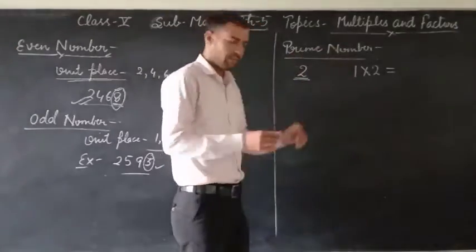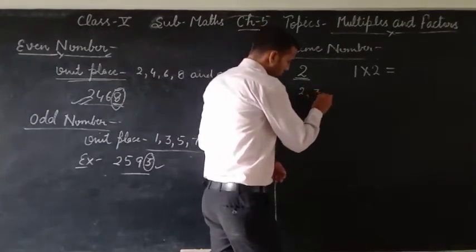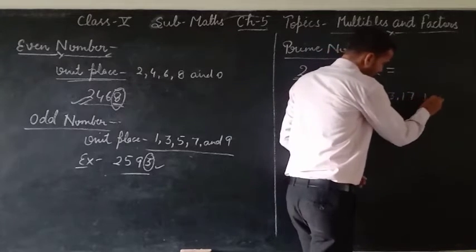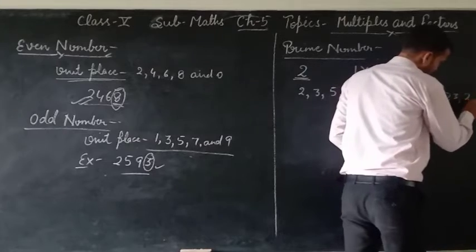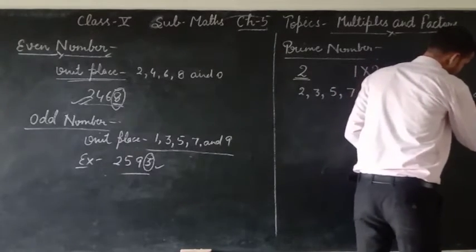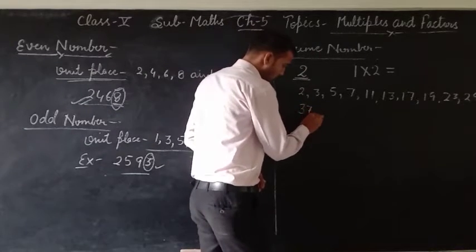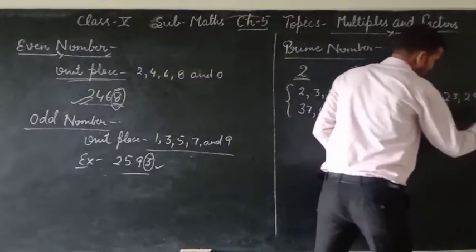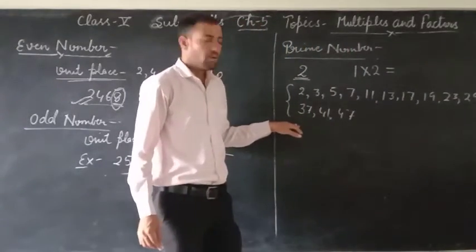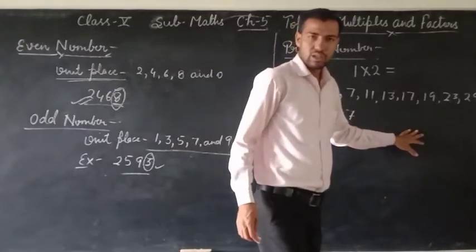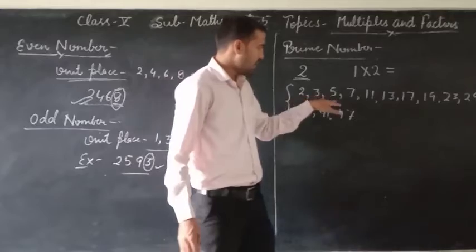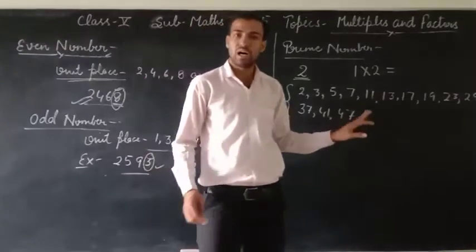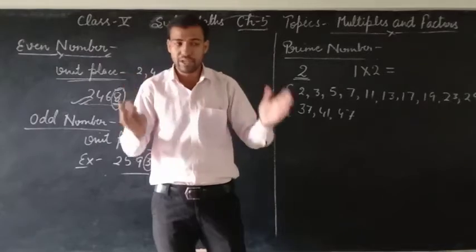Suppose some numbers are here: 2, 3, 5, 7, 11, 13, 19, 23, 29, 31, 37, 41, and 47. These are the prime numbers from 1 to 50. Yes — 2, 3, 5, 7, 11, 13, 19, 23, 29, 31, 37, 41, and 47 are the prime numbers between 1 to 50.